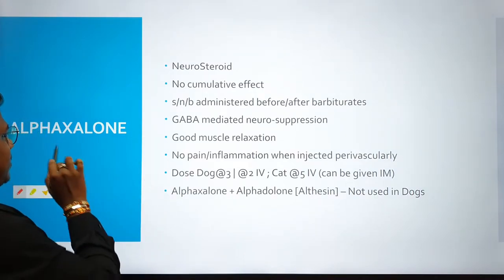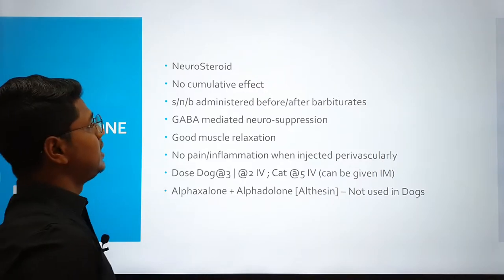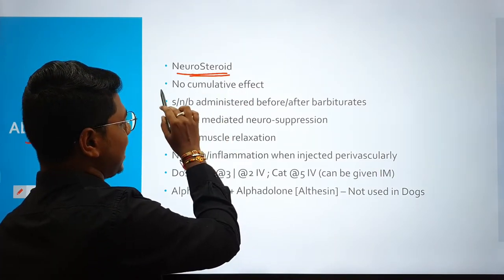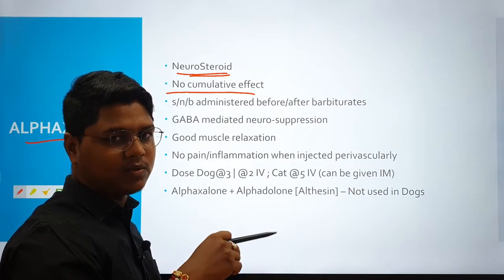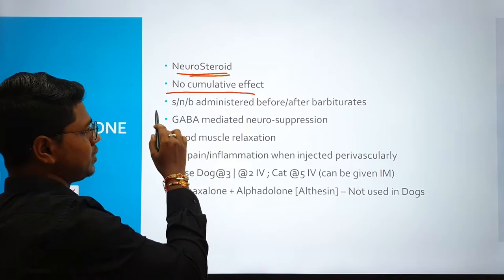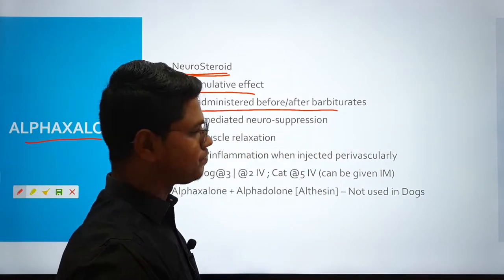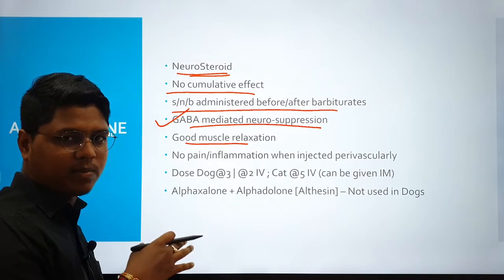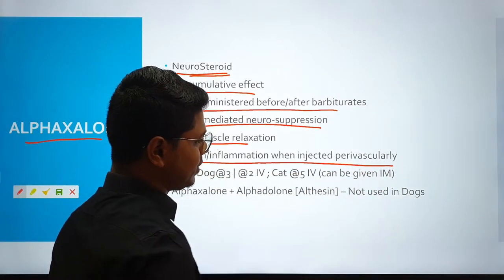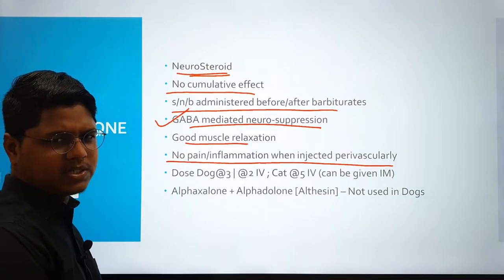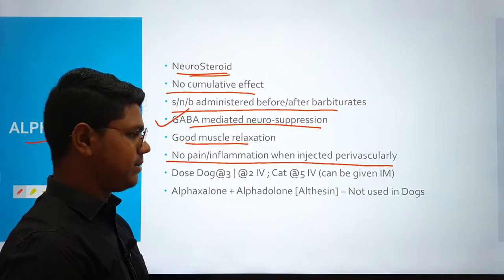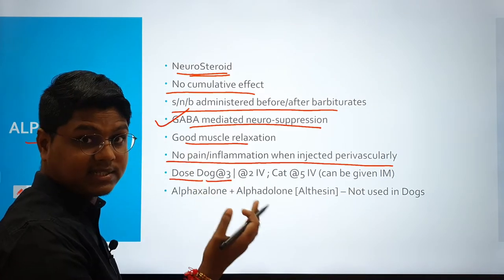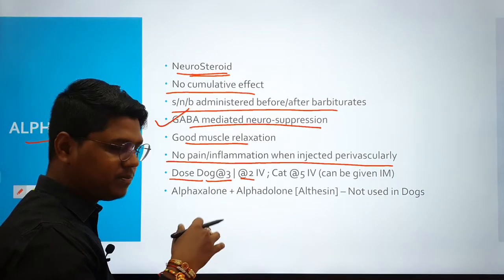The last drug is alfaxalone — it is a neurosteroid. It is a steroid with neurosuppressive properties. Unlike barbiturates, it does not have any cumulative effect — compare this with thiopental which has a cumulative effect. Alfaxalone should not be administered before or after barbiturates. Its mechanism of action is also GABA-mediated neurosuppression, and it has good muscle relaxation properties. Unlike barbiturates, it does not cause inflammation, tissue reaction, or pain when injected perivascularly. Dosage in dogs: 3 mg/kg IV without pre-anaesthetics; 2 mg/kg IV with pre-anaesthetics.